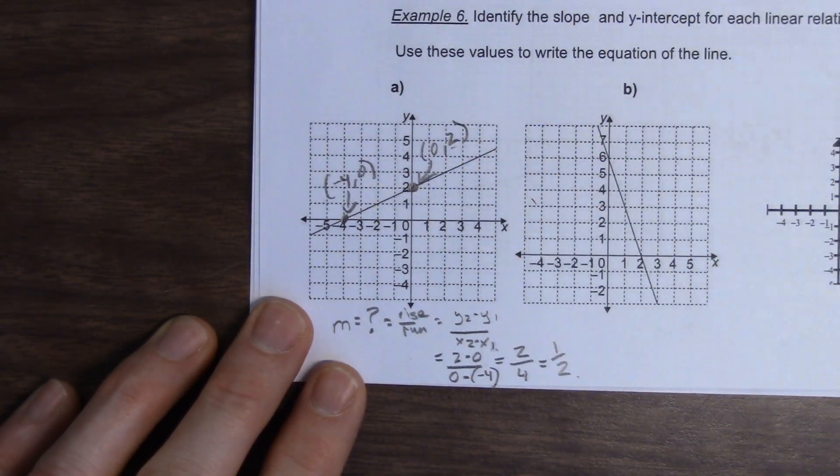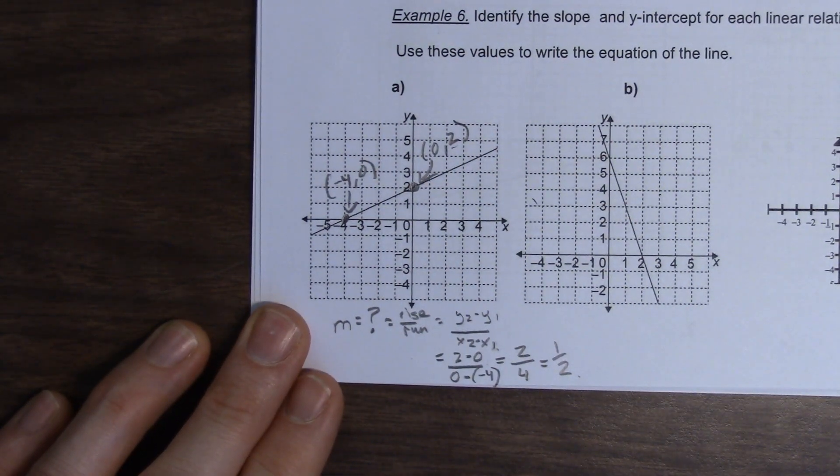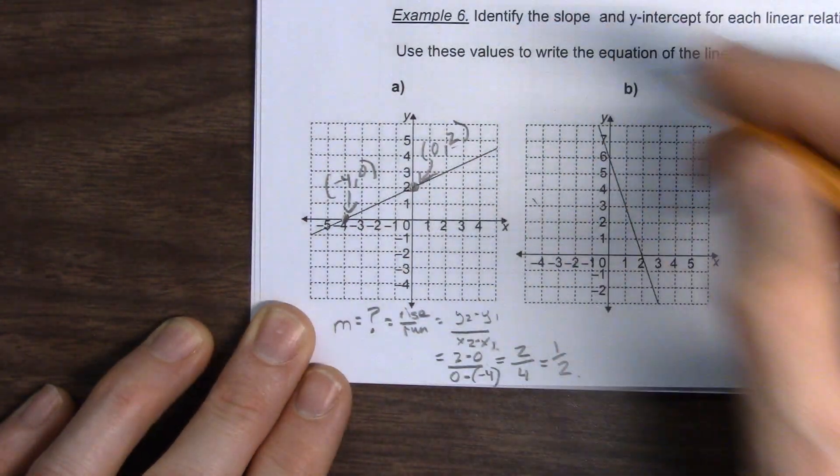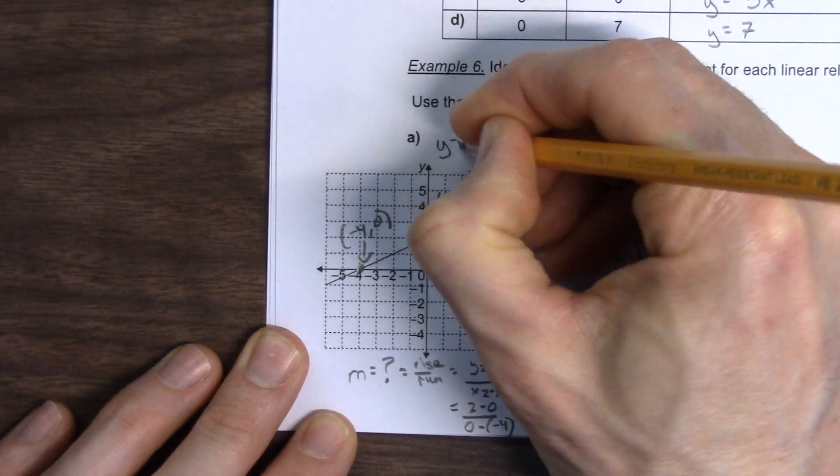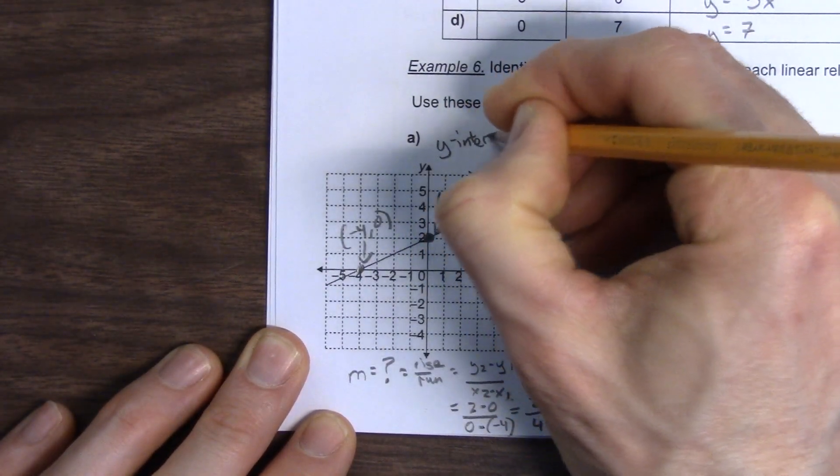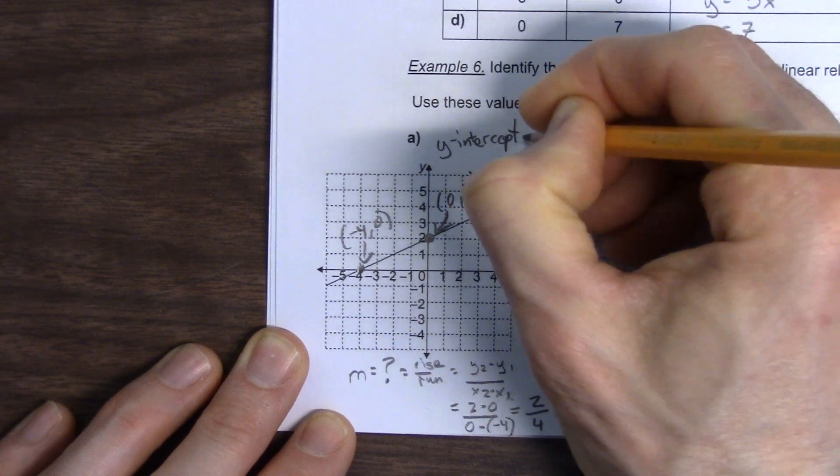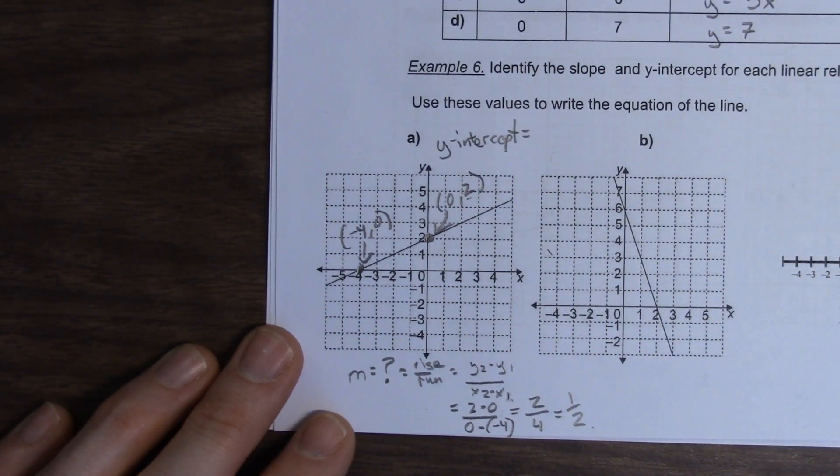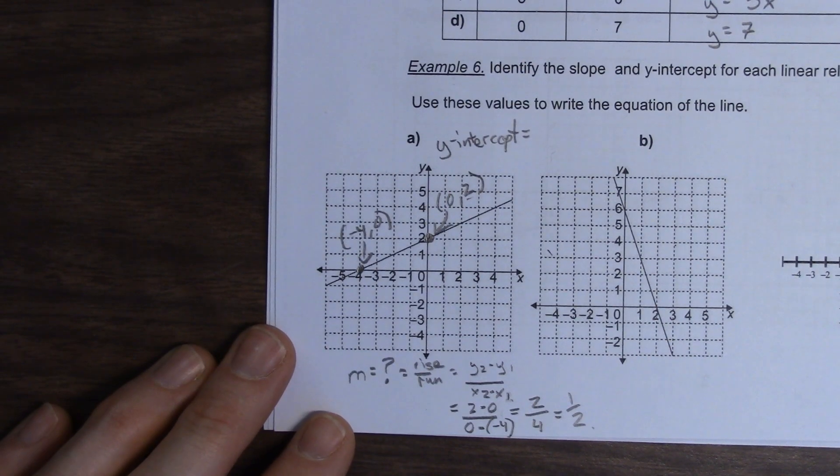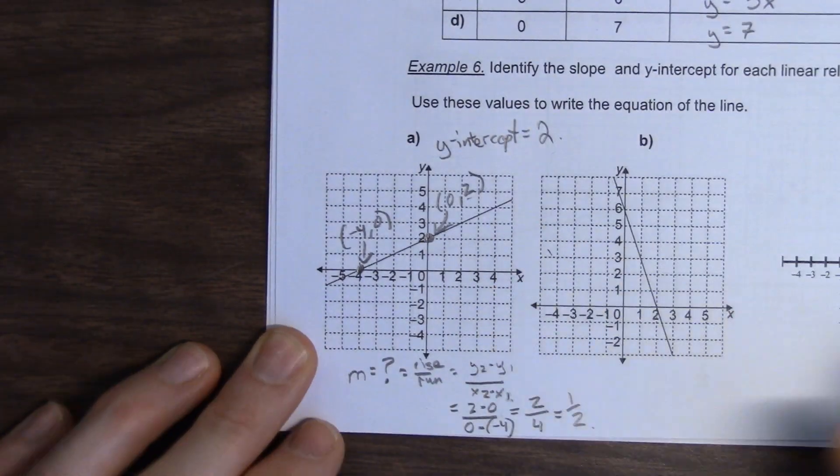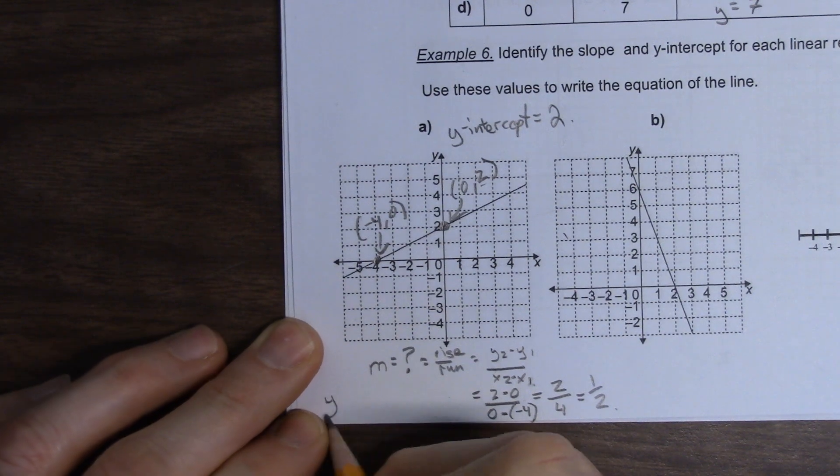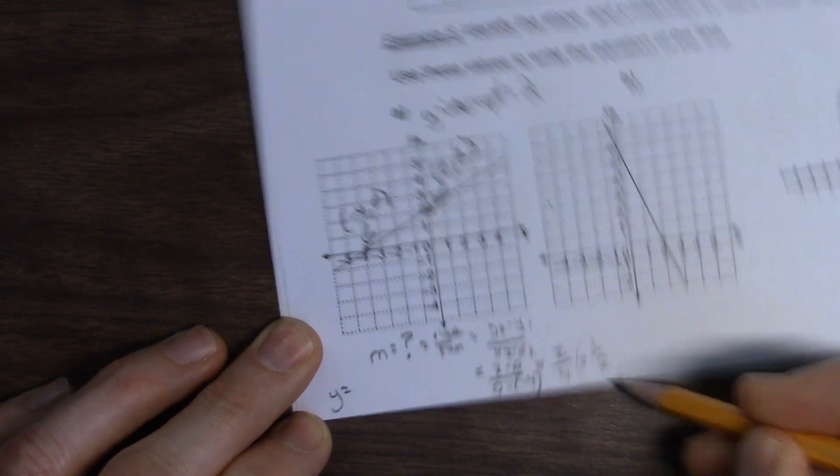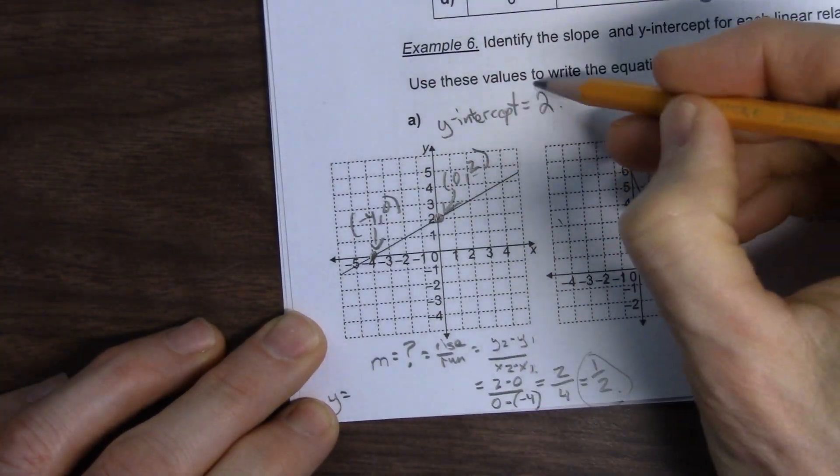Any questions there? So, we got the slope is 1 half. And, Chenier, what's the Y intercept for this graph? Like where? What are you talking about? No, I'm talking about the Y intercept. So, where the line crosses the Y axis. Positive 2. Positive 2. Good.